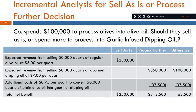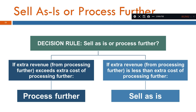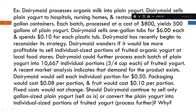It is better to further process because the company will earn $6,500 extra operating income from further processing. The decision rule: if extra revenue from further processing exceeds the extra cost of processing, then process further. If extra revenue from processing is less than the cost of processing, then sell as-is. This is how you make a sell as-is or further process decision. Additional examples are provided for self-study.